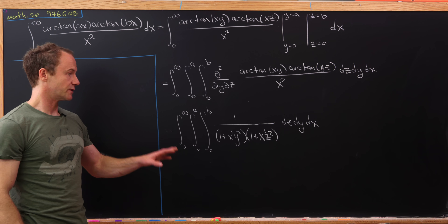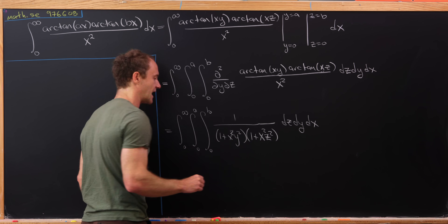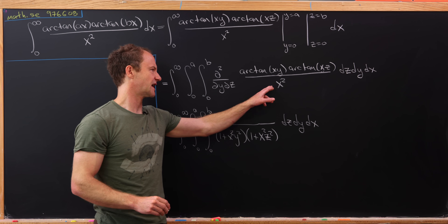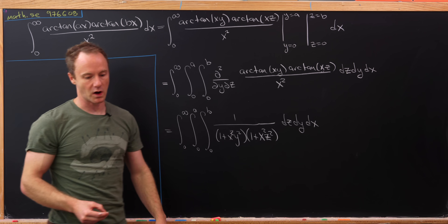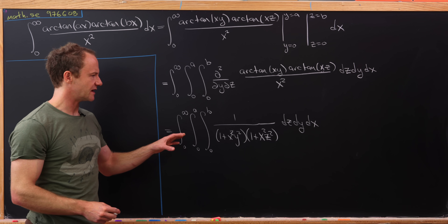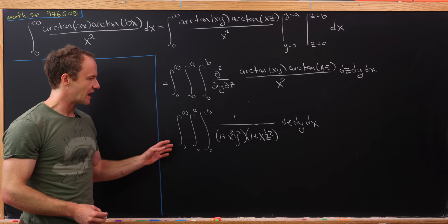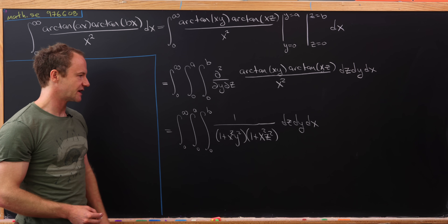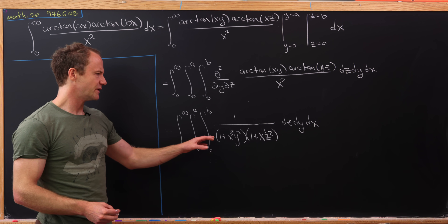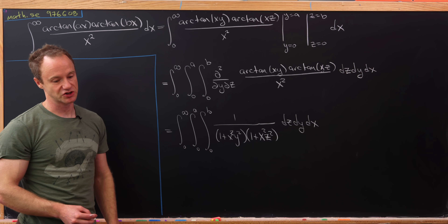When we took those partial derivatives with respect to y and z, that spit out an x which canceled these one at a time. Now look at this — we've got an integral of a rational function. Looking ahead, we're probably going to change the order of integration, which means we'd like to integrate this rational function by partial fraction decomposition.